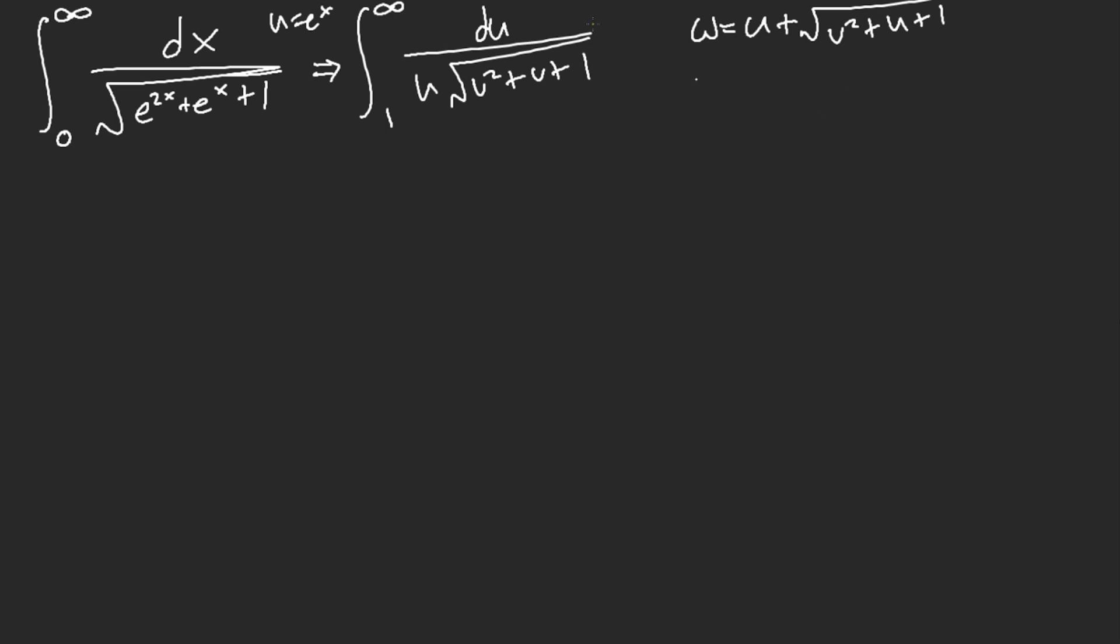Okay, time for the most annoying part. The most annoying part is we let w minus u equal this. The most annoying part is finding du, because you're force-subbing, technically.